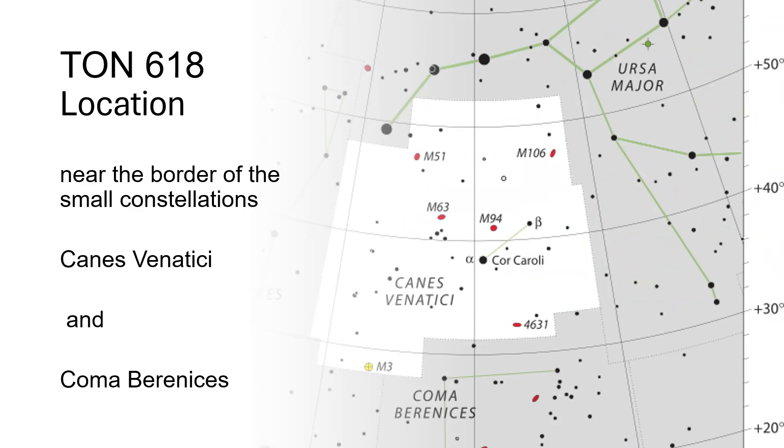If you look at the stick diagrams of these, it doesn't make any sense at all because Canis Venatici, the hunting dogs, is just that green line that goes from alpha to beta. So somehow one line makes a dog or several dogs. And then Bernice's hair is just three stars with two lines between them and a cluster called Melotte 111 to the side. But that's where TON 618 is.